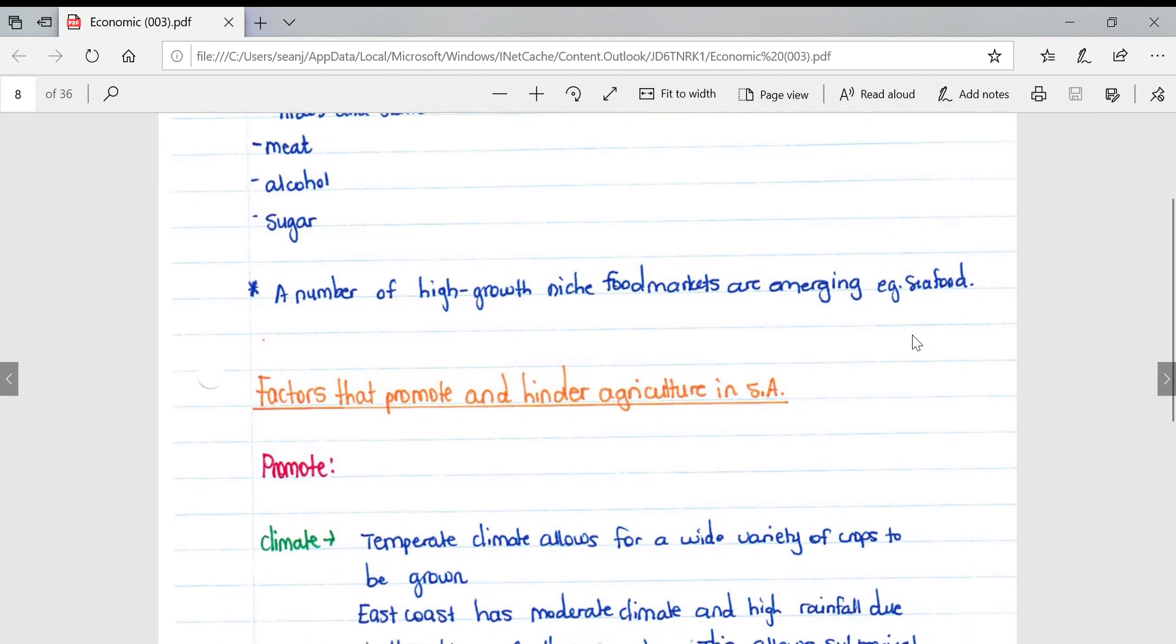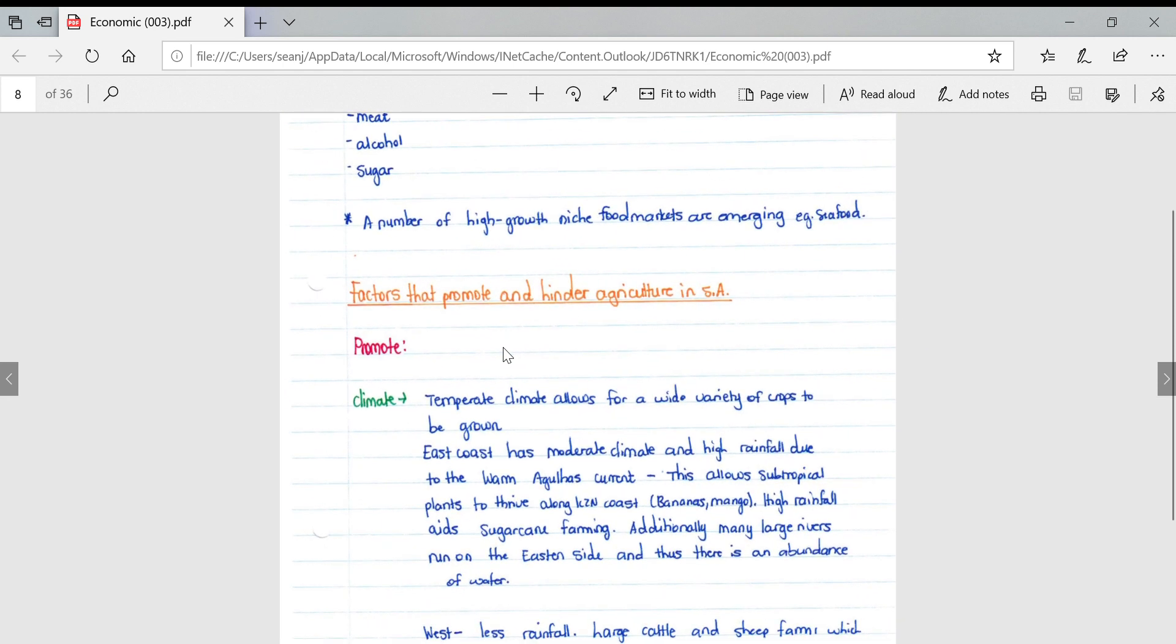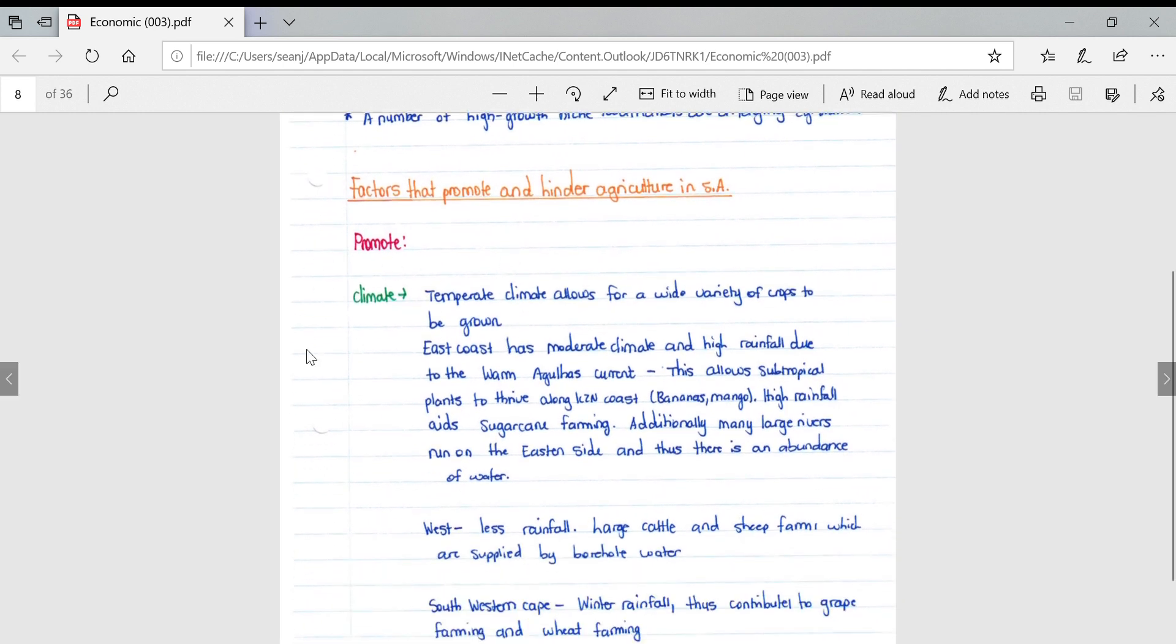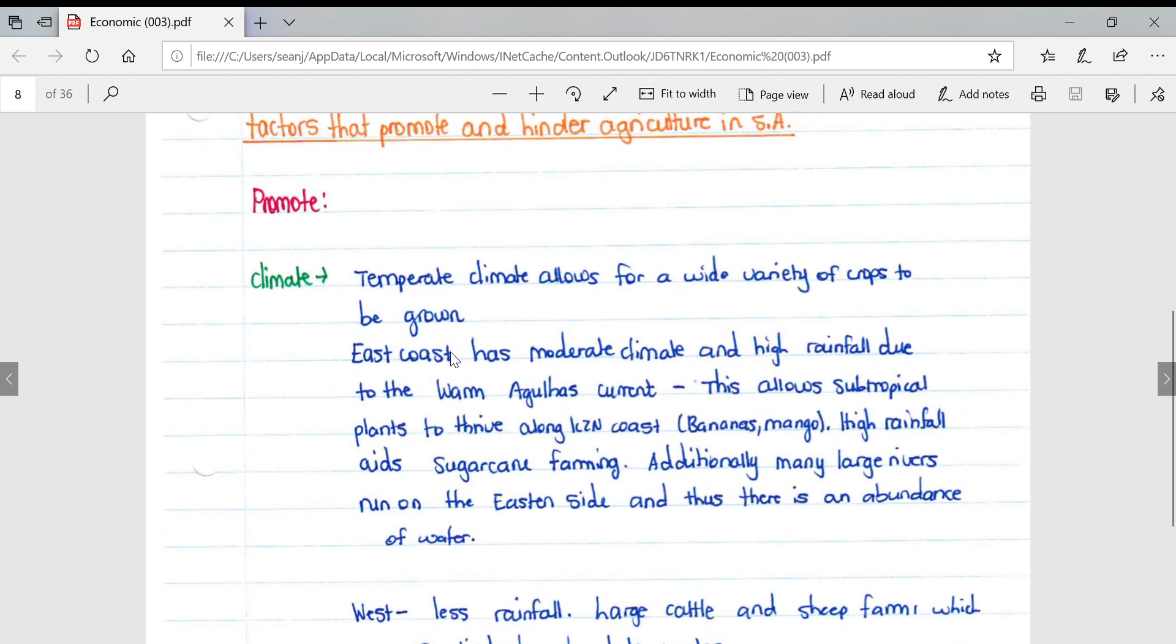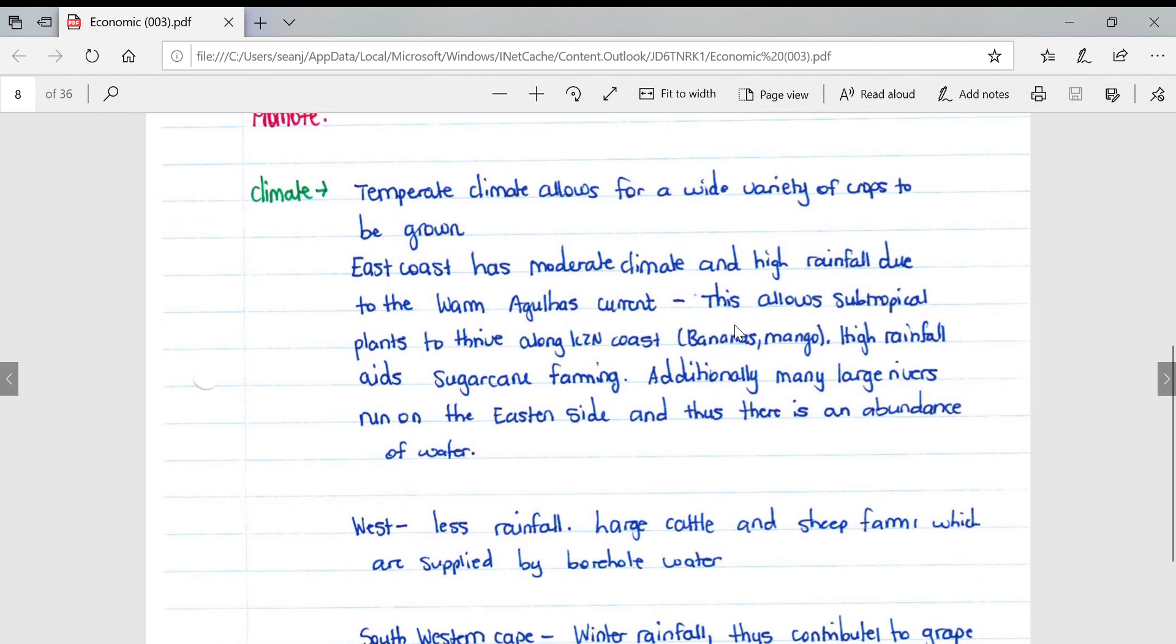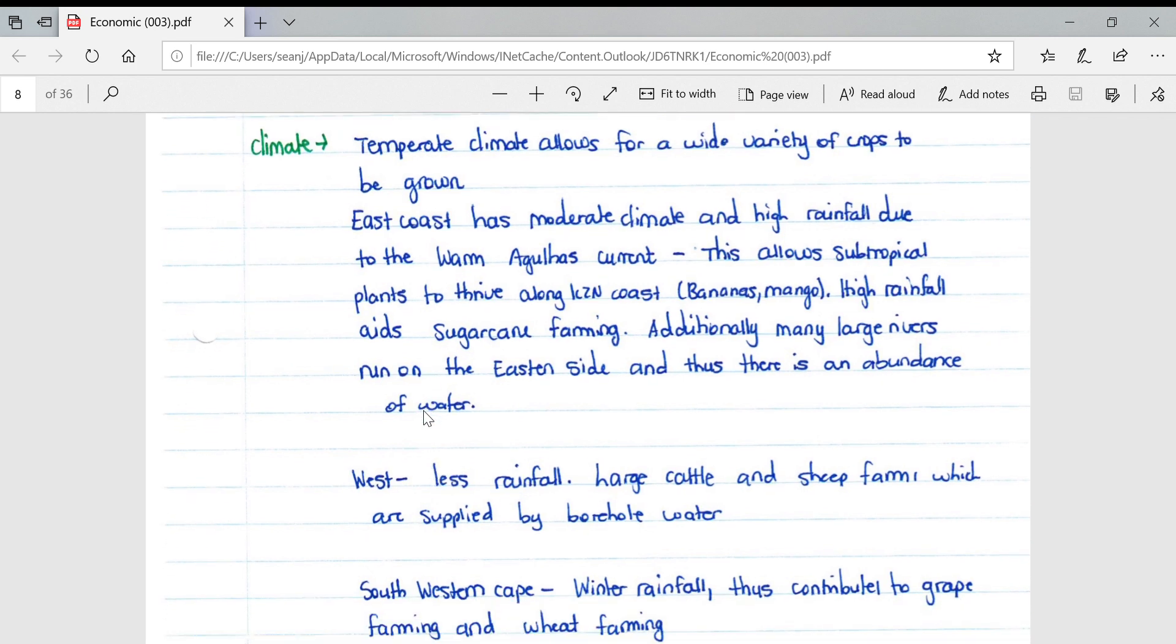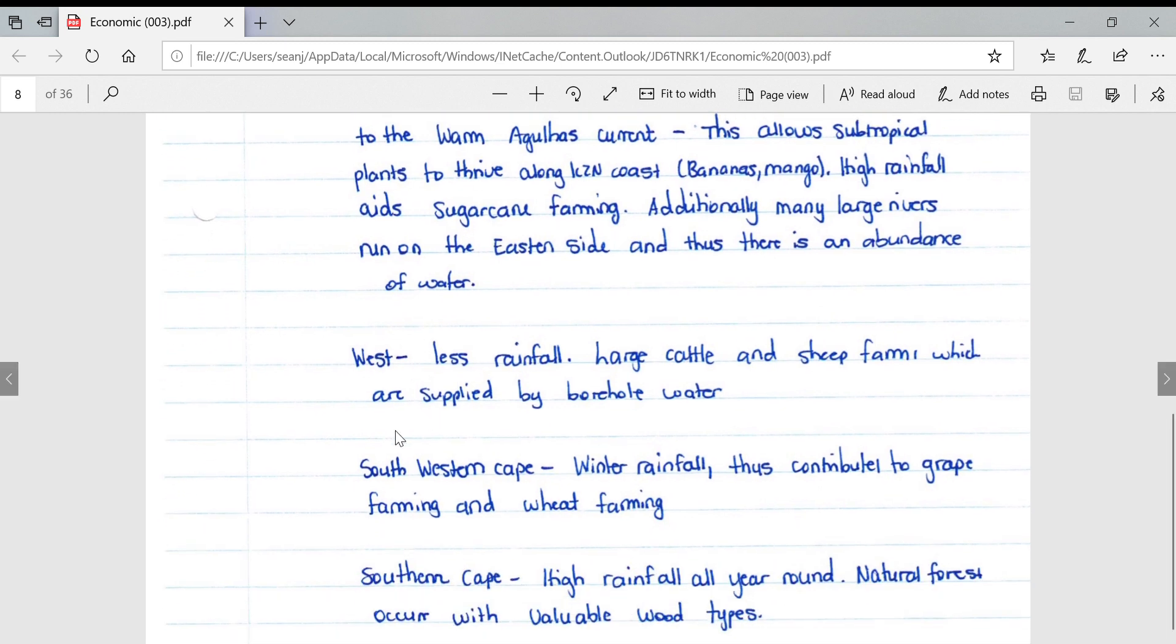Looking at factors that promote and hinder agriculture in South Africa, promoting agriculture is our climate. A temperate climate allows for a wide variety of crops to be grown. The east coast has moderate climate and high rainfall due to the warmer Agulhas current, allowing subtropical plants to thrive along the KZN coast such as bananas and mangoes. High rainfall areas aid sugarcane farming, and many large rivers run on the eastern side providing an abundance of water.